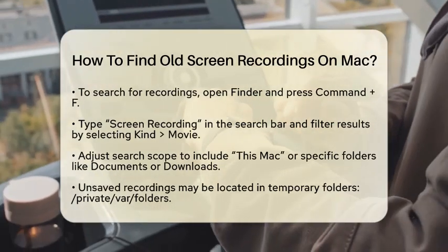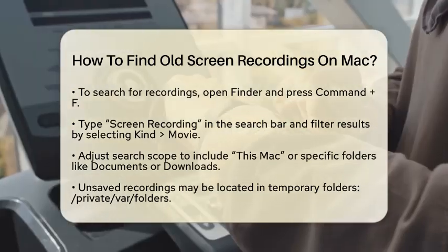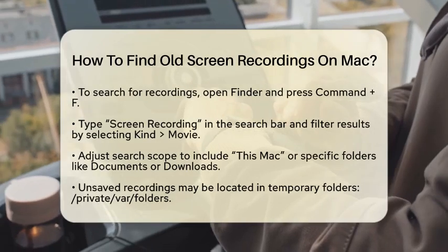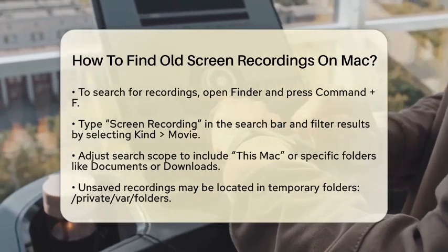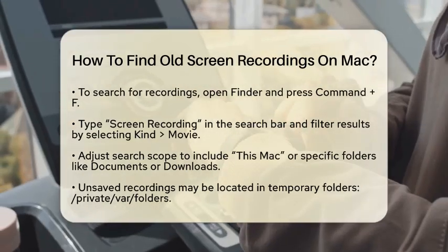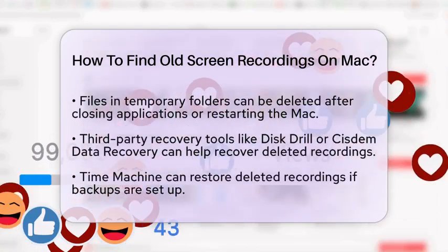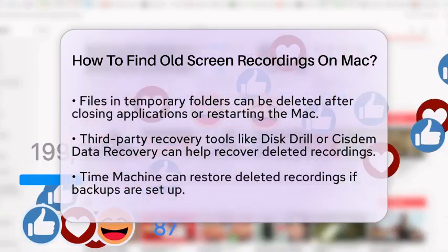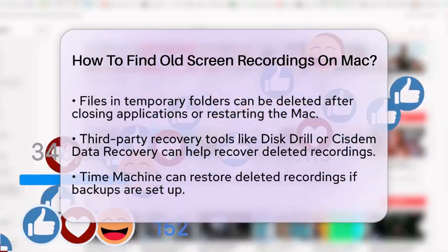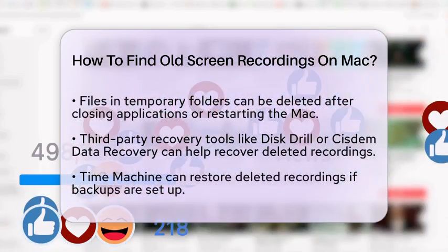Sometimes, unsaved recordings may end up in temporary folders. You can check these by navigating to the path slash private slash var slash folders. Use the Go to Folder option in Finder again. Keep in mind that files in this location are often deleted after you close the application or restart your Mac, so it is best to act quickly.